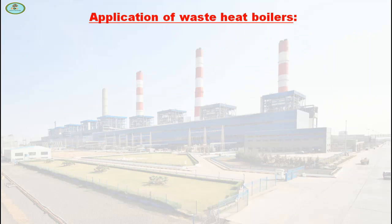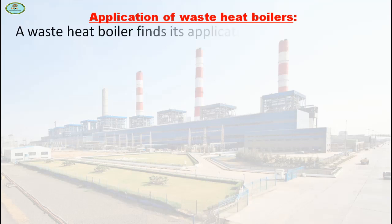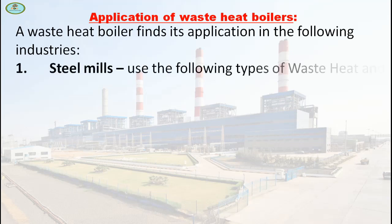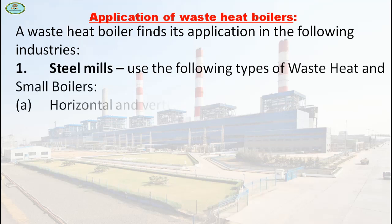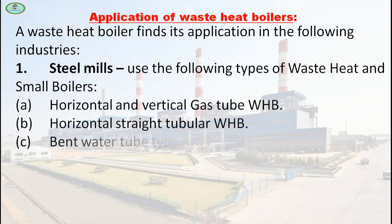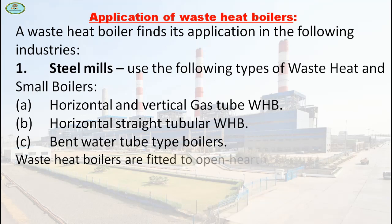Applications of waste heat boilers. A waste heat boiler finds its application in the following industries. First one is steel mills, which use the following types of waste heat boilers: horizontal and vertical gas tube WHB, horizontal straight tubular WHB, and bent water tube type boilers. Waste heat boilers are fitted to open-hearth furnaces and continuous heating furnaces.